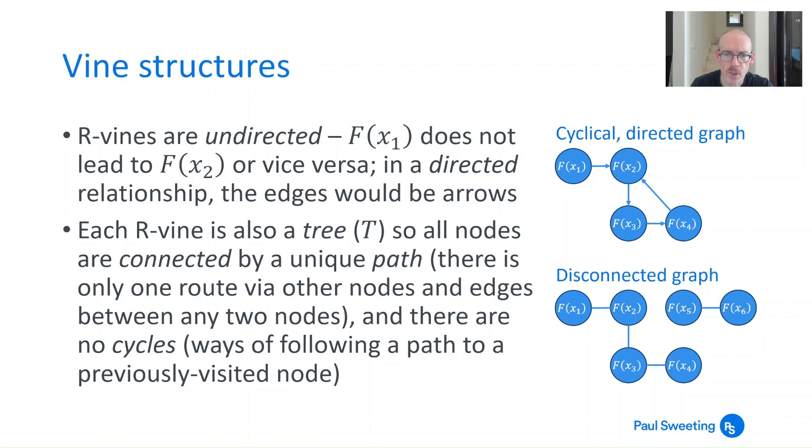It's also true to say that every R-vine is also a tree. So all of the nodes are connected by a unique path. Now what this means is two things. First connected. If you look at the bottom graph there that's a disconnected graph. So there's no way of getting from say f(x1) to f(x5) because there's no connection between them. An R-vine being a tree is connected. More than that all nodes are connected by a unique path. So if you look again at that bottom one if you want to get from f(x1) to f(x3) there's only one route to do it through f(x2). There's no other way of getting from f(x1) to f(x3). If you look at the top diagram if you want to get from f(x4) you could go f(x1) to f(x2) to f(x4). Or you could go f(x1) to f(x2) to f(x3) to f(x4). So there's more than one way. So that even if it didn't have the arrows wouldn't be a tree.